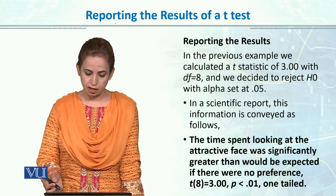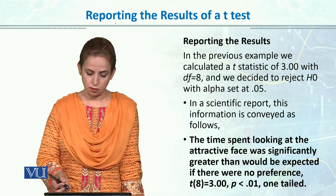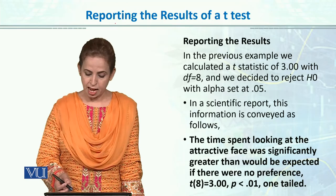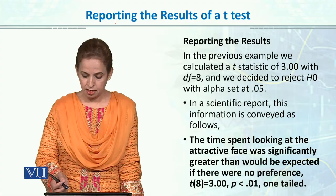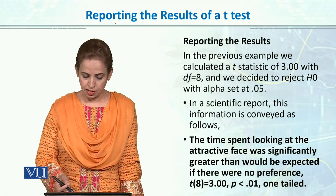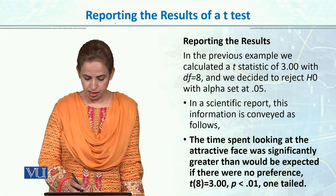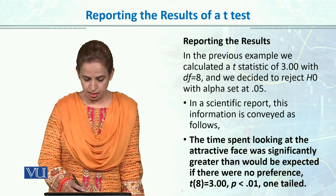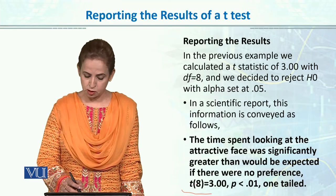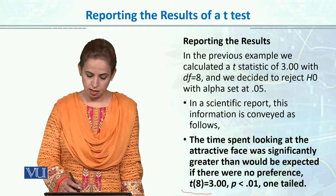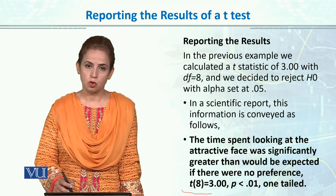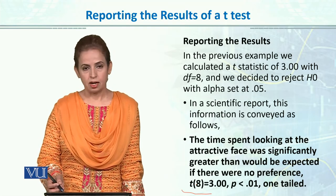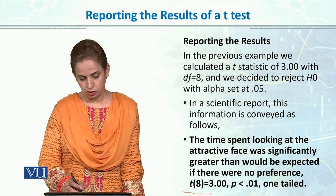In a scientific report, this information is conveyed as follows: 'The time spent looking at the attractive face was significantly greater than would be expected if there were no preferences.' And this is the format: t(8) = 3, p < 0.01, one-tailed. You give degrees of freedom in parentheses, then the t-value, then the p-value.